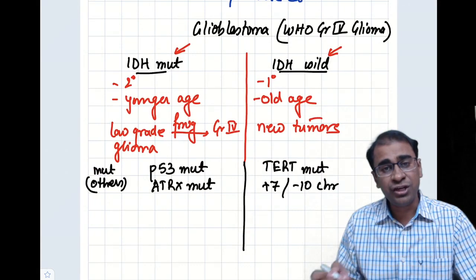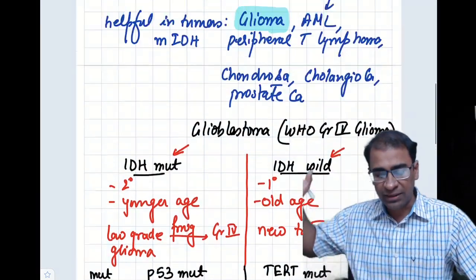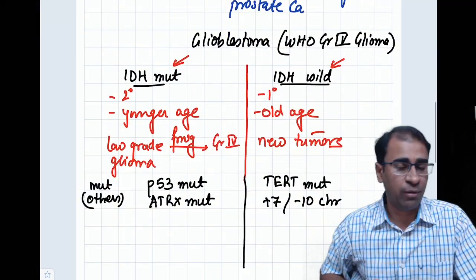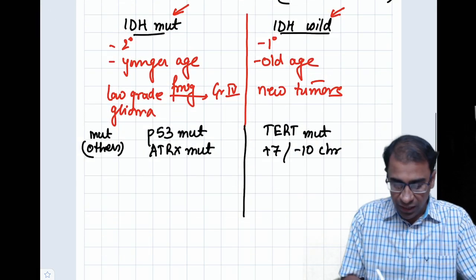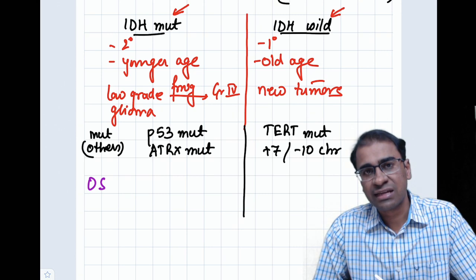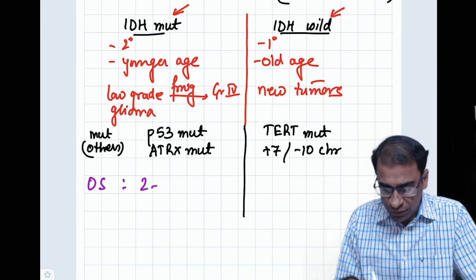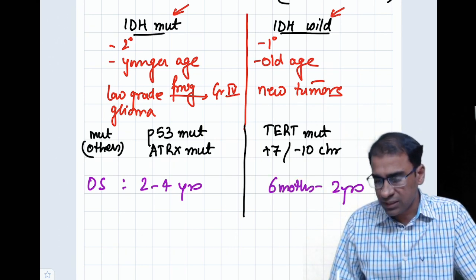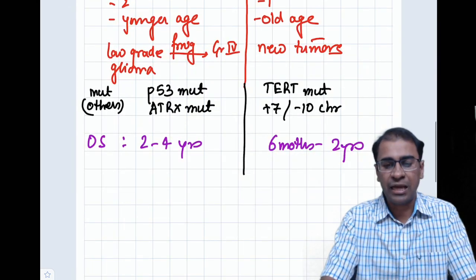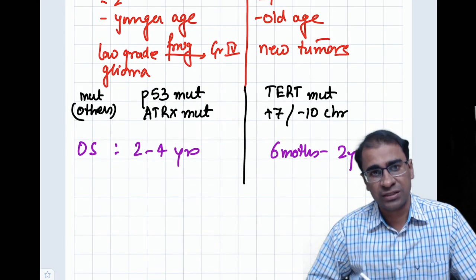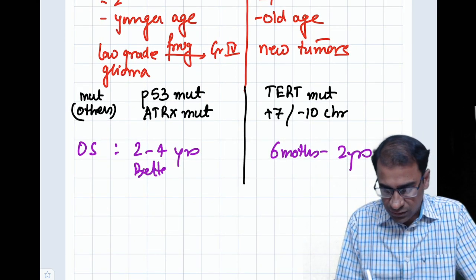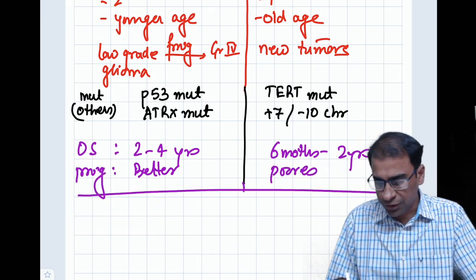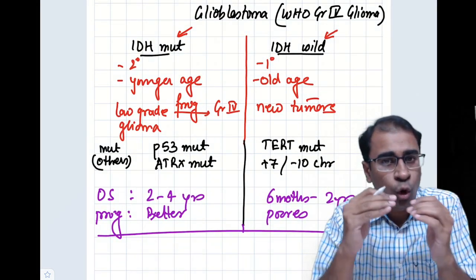You should be concerned about the treatment. Among these two, which can be treated by the drugs enasidenib and ivosidenib? Obviously, it is the mutated form - the secondary glioblastomas, not the primary ones. The overall survival after diagnosis is two to four years for IDH mutant and six months to two years in wild type. Therefore, it has better prognosis in the mutated form and poorer in the wild form of glioblastoma.